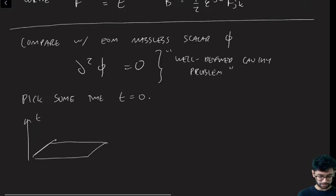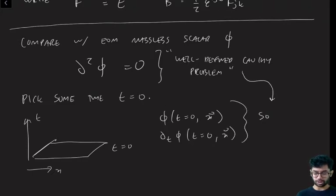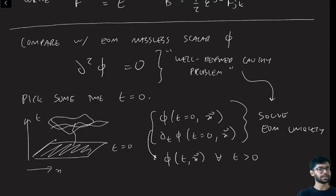Now, if you tell me what the field is doing at that time, and furthermore, what the first time derivative of the field is at that time, then the fact that this is a well-defined Cauchy problem means that you can solve the equations of motion uniquely and figure out what phi is doing for all later times. For all time greater than zero. In other words, you can solve the equations of motion to figure out what phi is doing. This theory has predictive power. If you know what's happening at initial times, you can figure out uniquely everything that is happening at later times. This is what we want physics to do. This is nice.